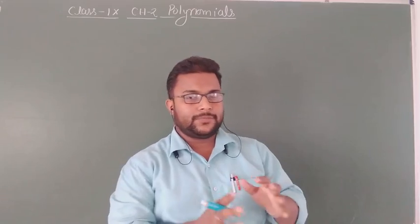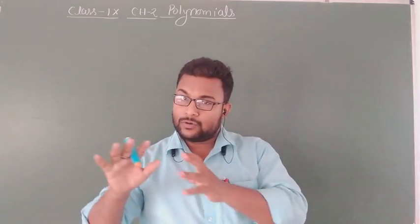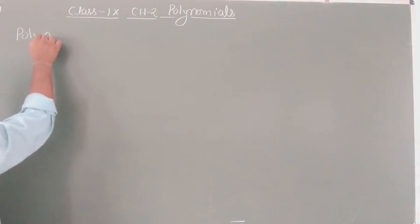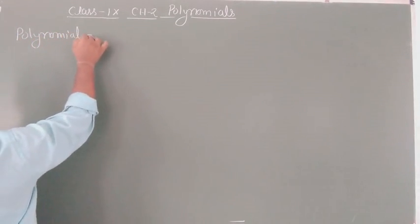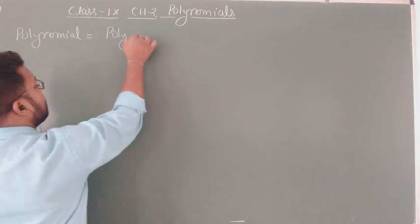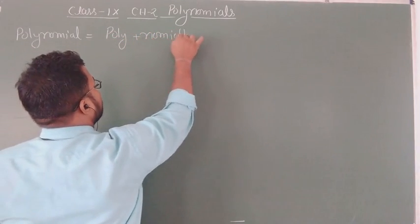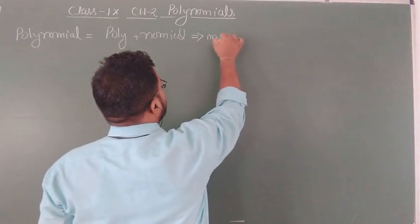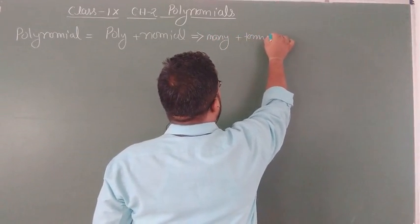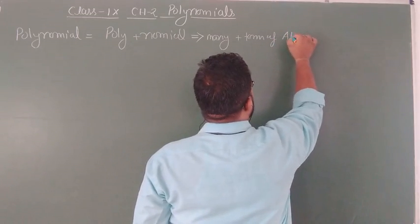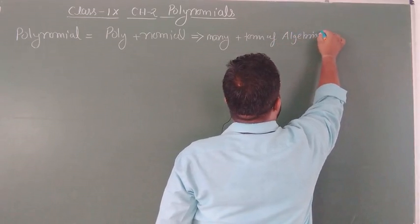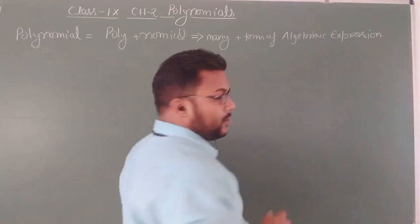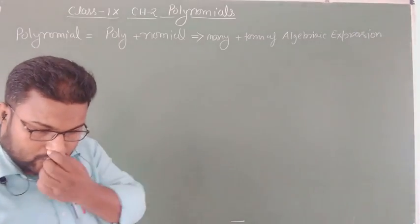Polynomial is a branch of mathematics related to the algebraic part. So first of all, what is the Polynomial? Polynomial means poly plus nomial — that is, mainly a term of an algebraic expression. Poly plus nomial means a many-term algebraic expression, which is also further defined.